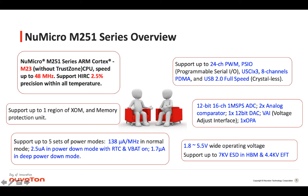We use one slide to show the M.251 series. This series is based on the Cortex M.23 core and can run up to 48 MHz. The inside RC oscillator can support up to 2.5% precision within the full temperature and voltage range. Inside this series, we include the XOM and the memory protection unit for program protection. We also support different kinds of power management, such as normal mode, idle mode, power down, and deep power down mode.